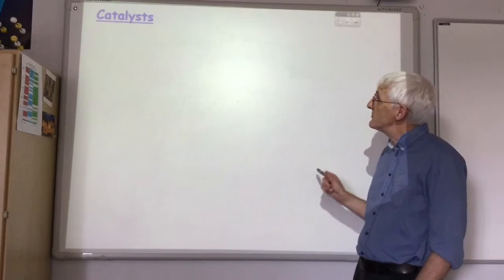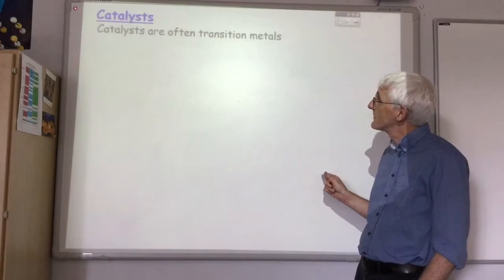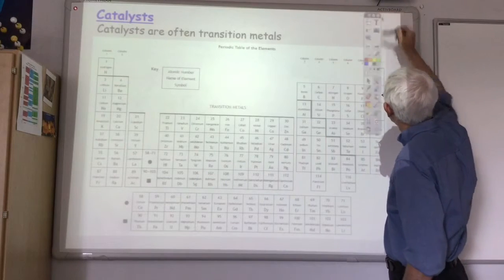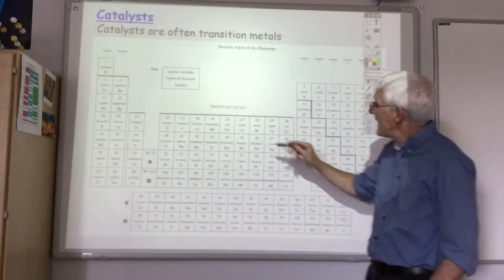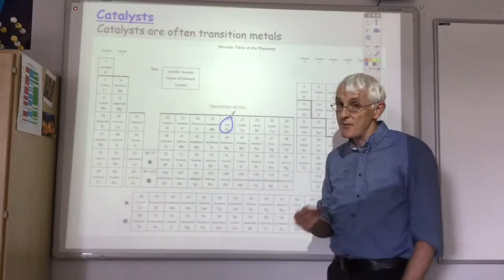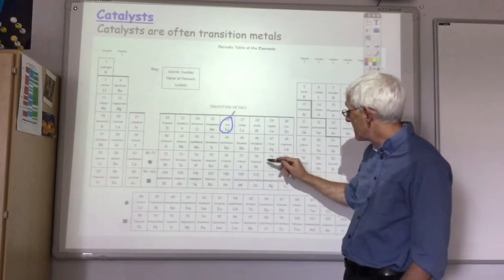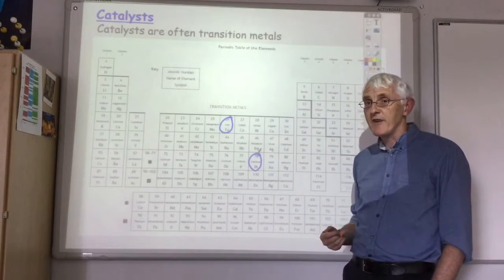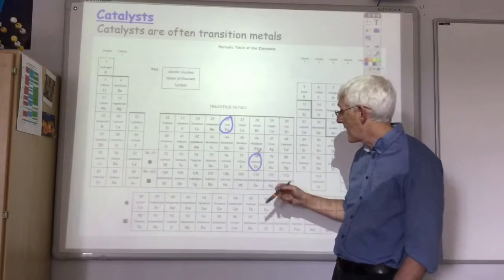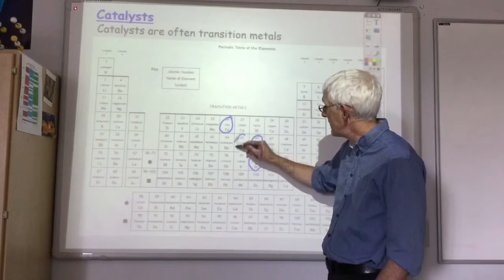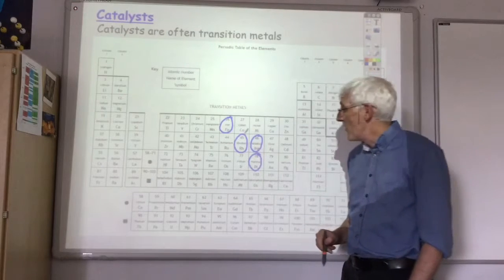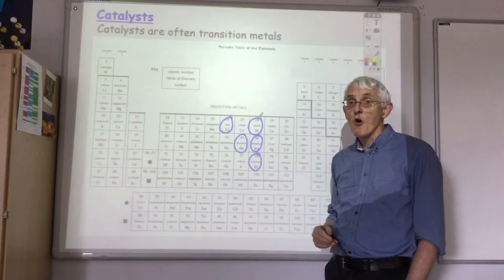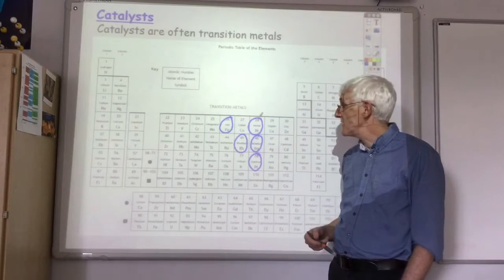Catalysts are very often transition metals. Some examples that you've already come across in your chemistry include Iron in the Haber process, Platinum in the Oswald process, then in the catalytic converter in cars, you tend to get Platinum, Palladium and Rhodium. Another example is Nickel, which is used in the hydrogenation of oils to turn them into margarine.